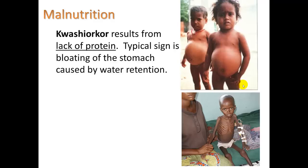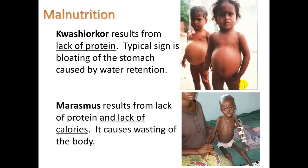Some of these diseases: Kwashiorkor, on top, results from a lack of protein. A typical sign is bloating of the stomach caused by water retention. It's common to look at a child like this and think they're not starving because of the size of their belly, but this is a biological response to not having enough protein. Marasmus is a condition that results from a lack of both protein and calories, and it causes a wasting of the body.